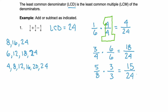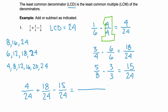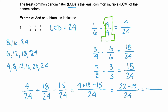Now that we know the equivalent fractions for our three given fractions, we can rewrite the math problem: 4 twenty-fourths plus 18 twenty-fourths minus 15 twenty-fourths. Remember, when adding or subtracting, the denominator always stays the same — it stays as 24 — and we just add and subtract the numerators. So we have 4 plus 18 minus 15. 4 plus 18 is 22, and 22 minus 15 is 7. The denominator stays as 24, so this simplifies to 7 twenty-fourths.